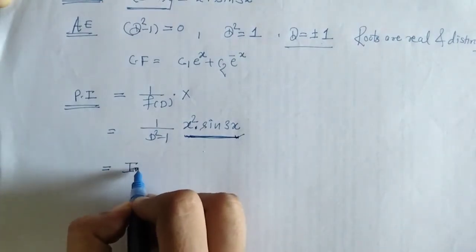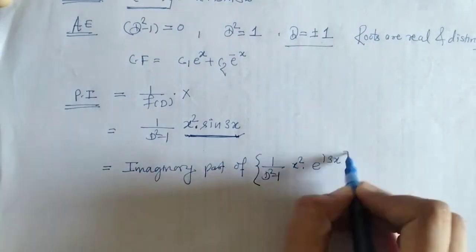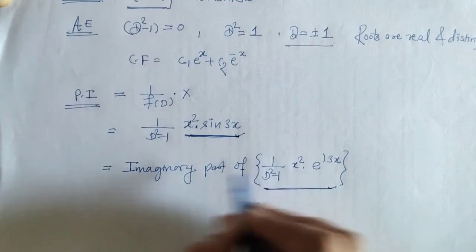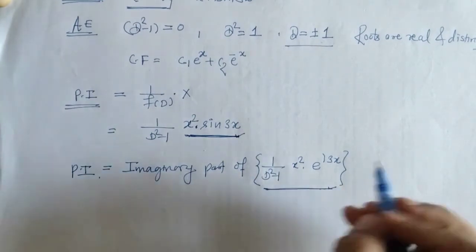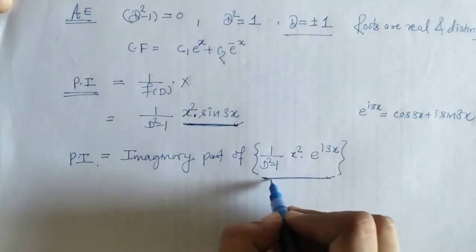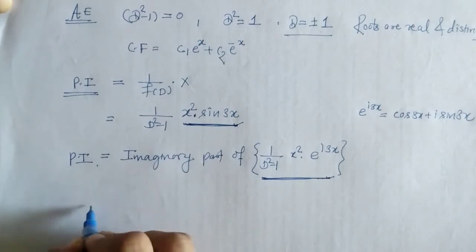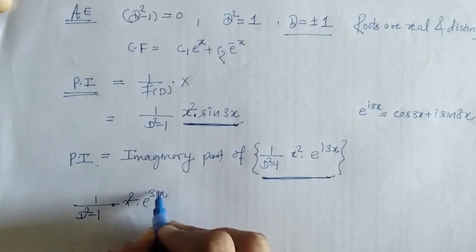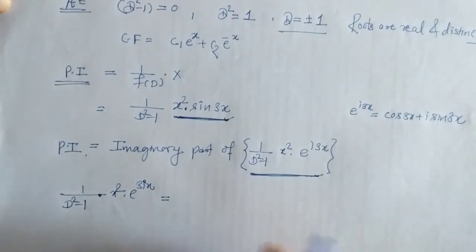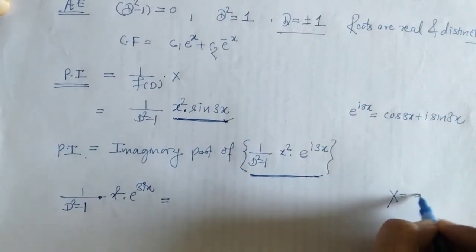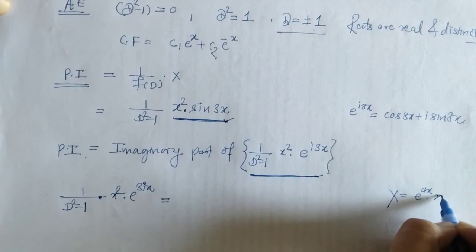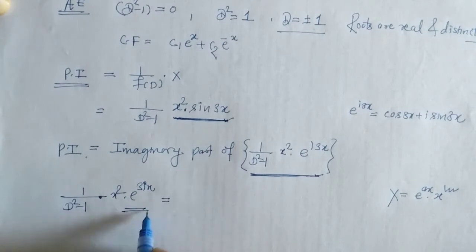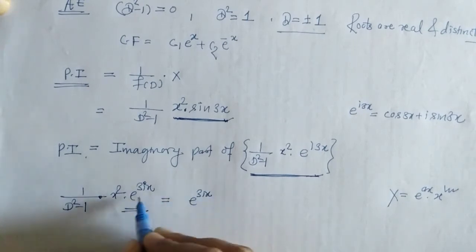We have to find the imaginary part of this operation, and that gives us the required PI. Now first we will solve this operation. This is of the form x = e^(ax) · x^m. So we have to take e^(ax) outside and at the same time replace d by d + a, where a is here 3i.